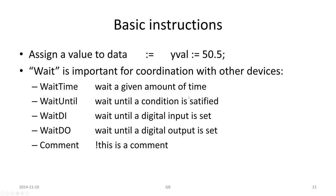There are some basic instructions that are valid in RAPID. We can assign a value to data — like yval := 50.5, for example, ending with a semicolon. Wait is quite important as an action statement: wait time, wait until, wait digital input, wait digital output. Or a comment, just an exclamation mark — this is a comment on one instruction line.